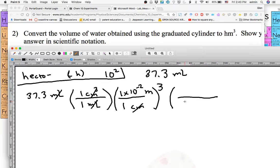Now I want hectometers, so 1 times 10 to the 2 meters is 1 hectometer. So this needs to be cubed because these are cubed. Now the meters cubed can cancel.